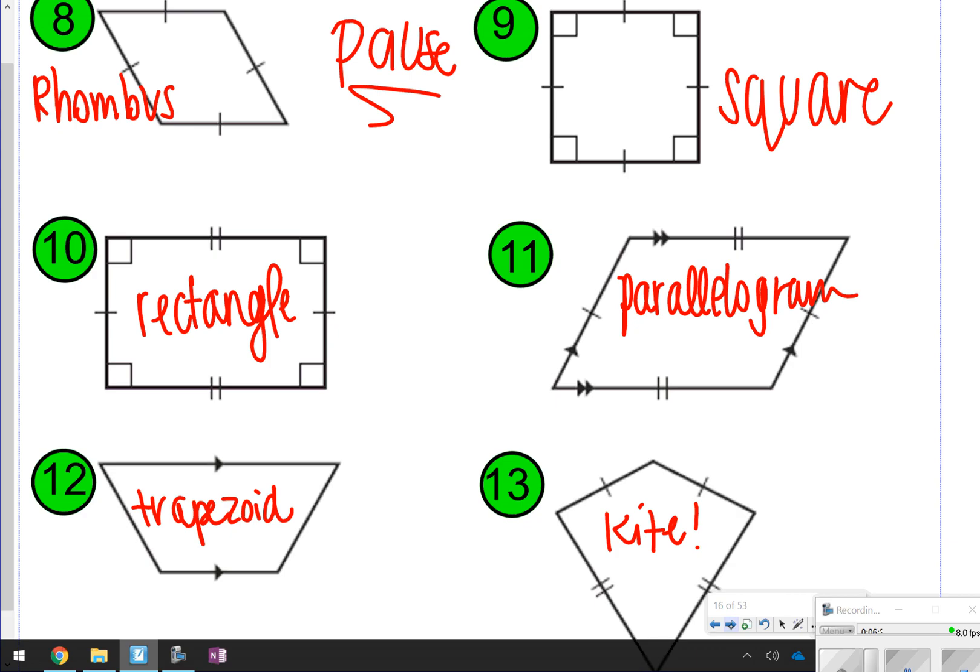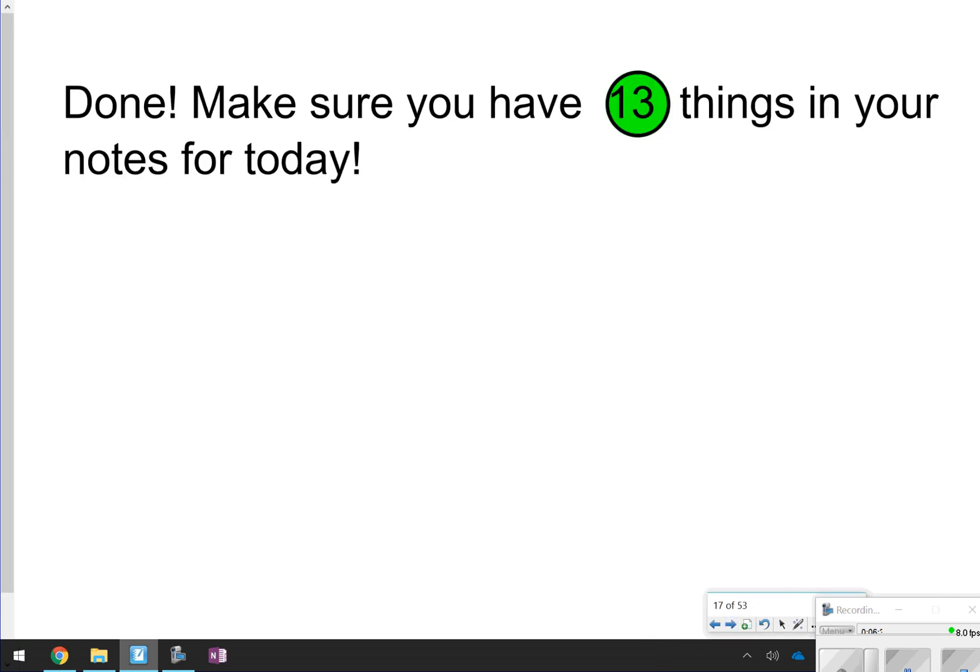That's going to conclude our notes for today. Again, all we did is we classified many types of triangles with their angles and sides and quadrilaterals. You have three types of quadrilaterals. And under parallelograms, you have three types of parallelograms. Thanks so much for tuning in, and we'll catch you next time.